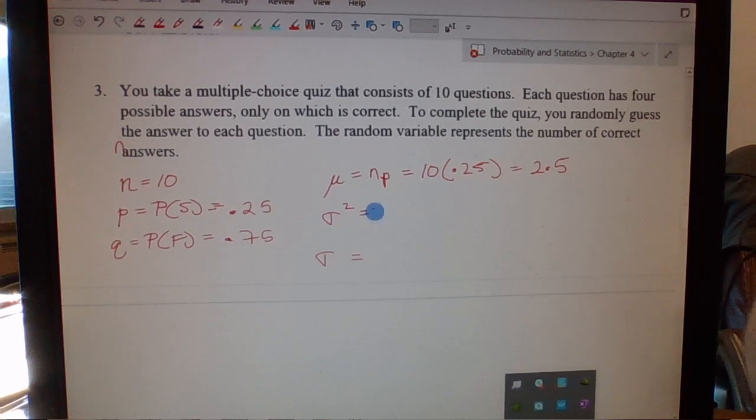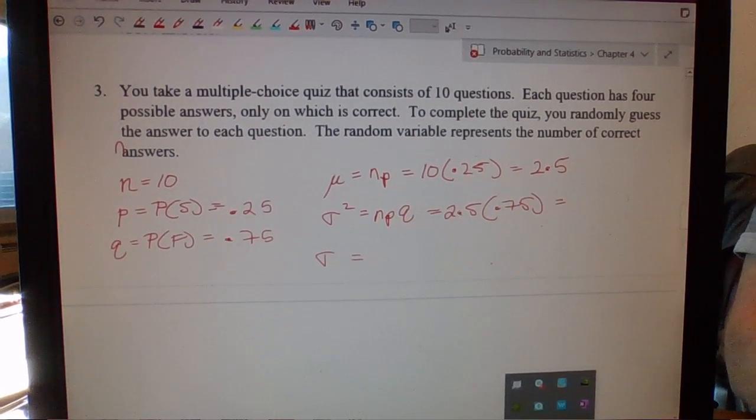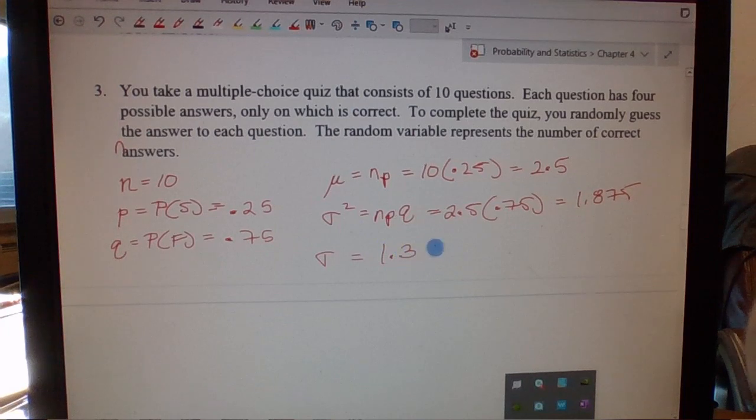Now, if we want to find the standard deviation, we're going to take N times P times Q, and this first is going to find the variance for us. So we already know N times P is 2.5, and we'll multiply that by Q, which is 0.75. So when we do that, 2.5 times 0.75 gives us 1.875. That's my variance. So then remember, the standard deviation is then the square root of that. So 1.3, we'll just go round this to 7, 1.37.